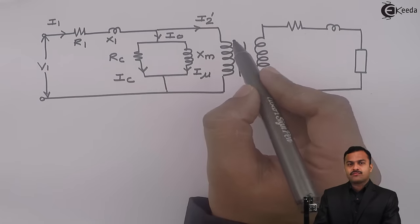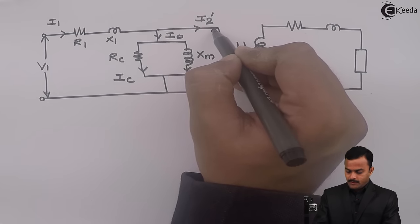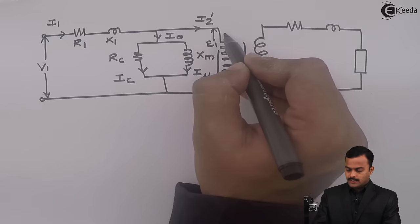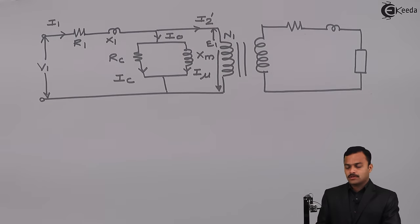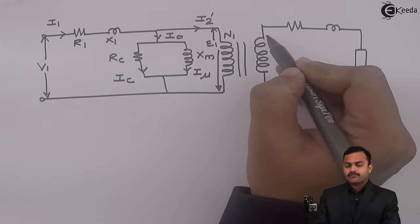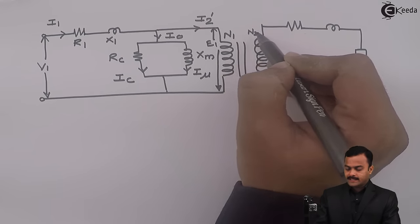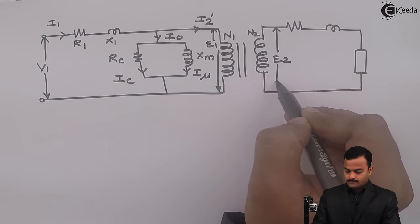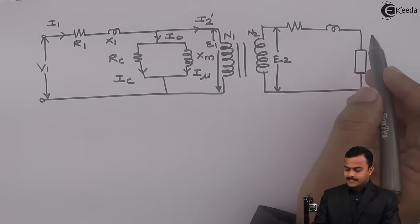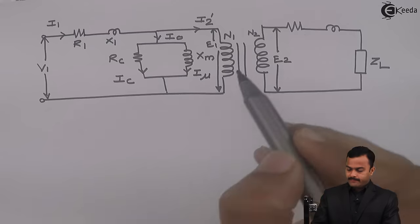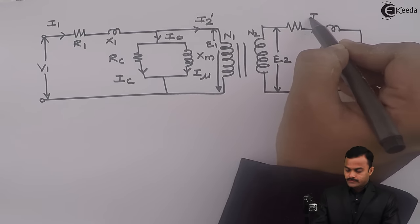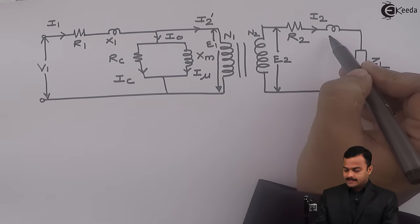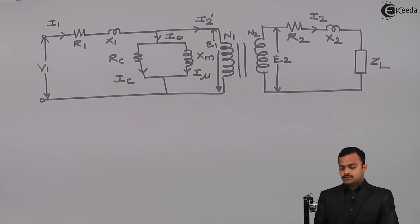Because of flux phi, there will be an EMF induced at the primary side, represented as E1, and that depends upon the number of turns of the primary winding. The same flux phi is linked through secondary turns to give rise to secondary induced EMF E2. If the secondary winding is closed through load ZL, there will be secondary side current I2, which will flow through secondary winding resistance R2 and secondary leakage reactance X2.